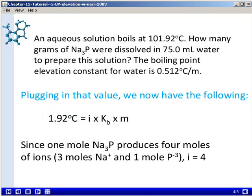Let's take a look at calculating I. Remember, I is the number of individual particles, which are typically ions, formed by a compound in solution. Since 1 mole of sodium phosphide produces 4 moles of ions, 3 moles of sodium ions and 1 mole of phosphide ions, I is going to be equal to 4 in this equation.